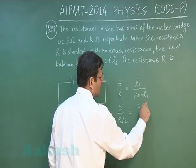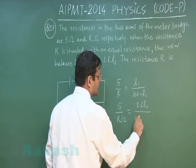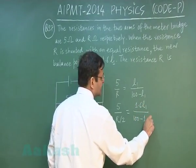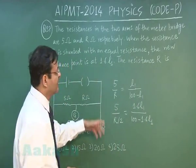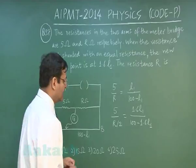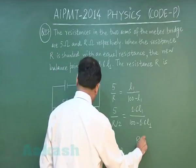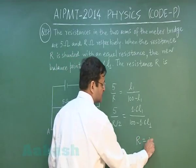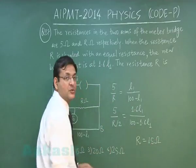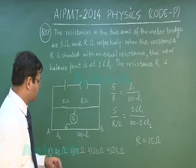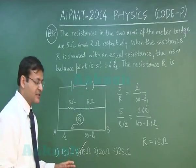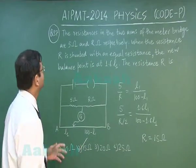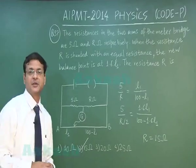This is another equation you will be getting. Now you just divide both of them, you will be getting balancing things, and for that matter R value will be coming out to be 15 ohm. Understand, just solve these two by whatever method you feel like, and the most appropriate answer for this question will be option number 2, and that explains question number 27.